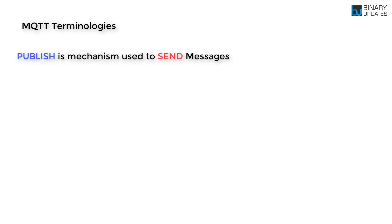Let me revisit some key concepts learned in this lesson before we use them in future projects to control and monitor devices remotely using MQTT protocol. Publish is a mechanism used in MQTT to send messages — so we use publish to send a message to control some device. That's why we publish the message 'on' on 'device/LED' when we want to control the LED.